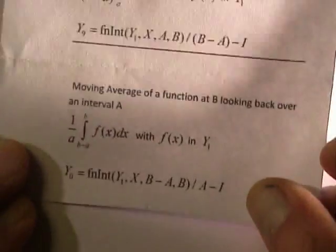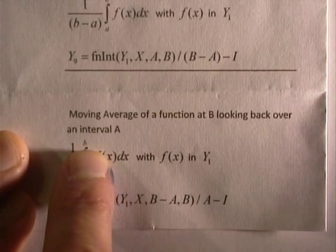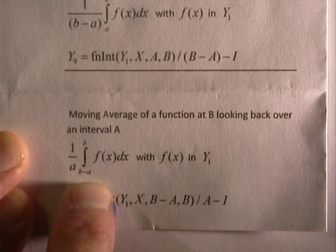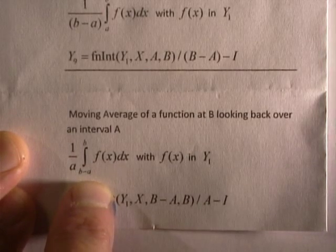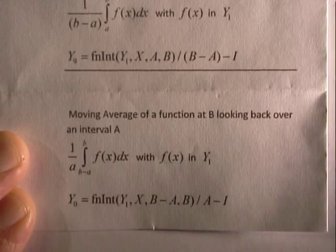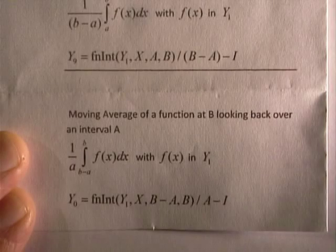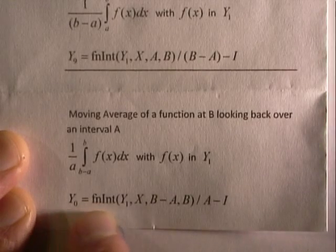And finally, this one is the moving average. You evaluate it at some place B and then you look backwards at distance A and then you have to divide by that interval or that distance A in order to get the average of that looking back, that moving average. And here's what you need to type in Y0.